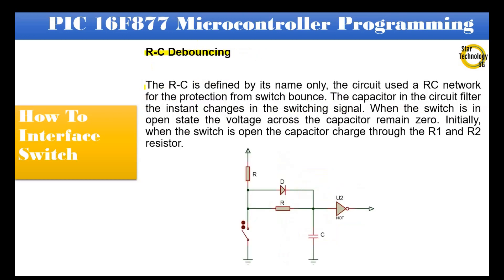RC debouncing: The RC circuit, as defined by its name, uses an RC network for protection from switch bounce. The capacitor in the circuit filters the instant changes in the switching signal. When the switch is in the open state, the voltage across the capacitor remains zero. Initially, when the switch is open the capacitor charges through resistors R1 and R2. When the switch is closed the capacitor starts discharging to zero, hence the voltage at the input terminal of the inverting Schmitt trigger is zero, so the output becomes high. In the bouncing condition, the capacitor holds the voltage at VIN until it reaches VCC or ground. To increase the speed of RC debouncing, we can connect a diode, which reduces the charging time of the capacitor.